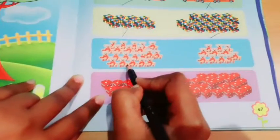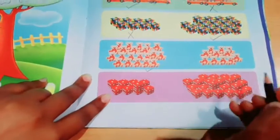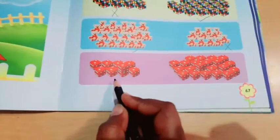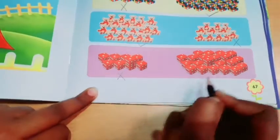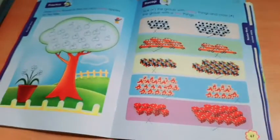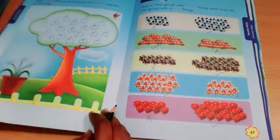Now these are many teddy bears, so we will tick it. Few teddy bears, cross it. Now few dice, cross it. Many dice, tick it. So students, after completing this, you have to open page number 55.